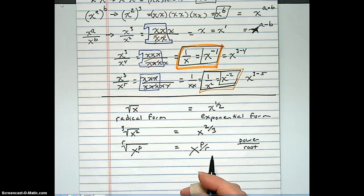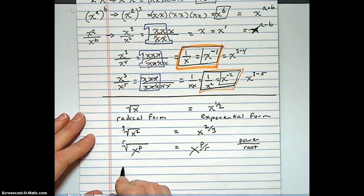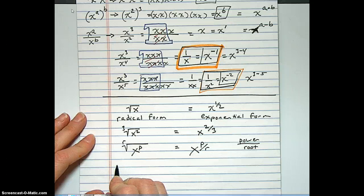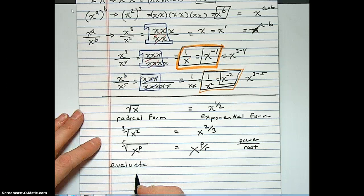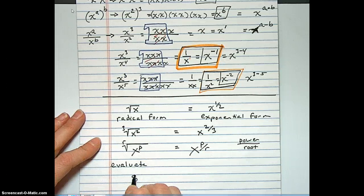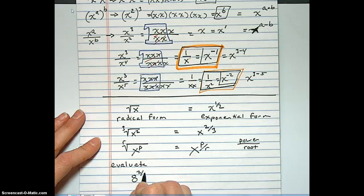Yep. If you don't get this, listen to me the first time around. Don't wait till the second time around. Okay. So let's calculate or evaluate something that's given to us in radical form. Eight to the two thirds.